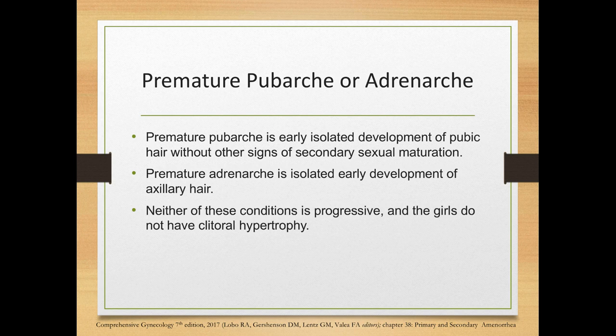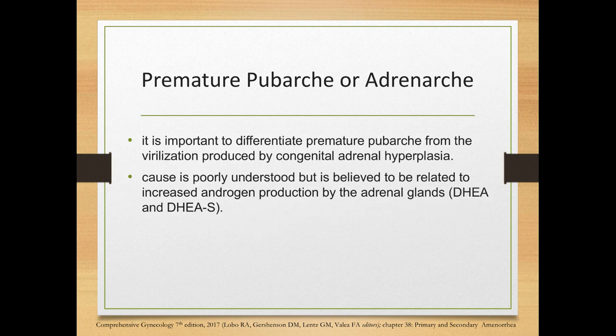We also have premature pubarche — early isolated development of pubic hair without other signs of secondary sexual maturation — and premature adrenarche, isolated early development of axillary hair with no other signs of secondary sexual maturation. Neither condition is progressive and the girls do not have clitoral hypertrophy. It is important to differentiate premature pubarche from virilization produced by congenital adrenal hyperplasia. The cause is believed to be related to increased androgen production by the adrenal glands.